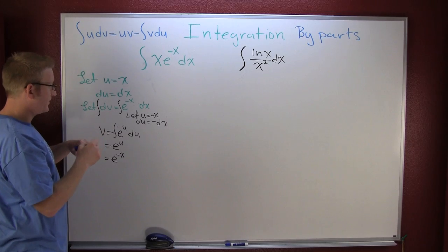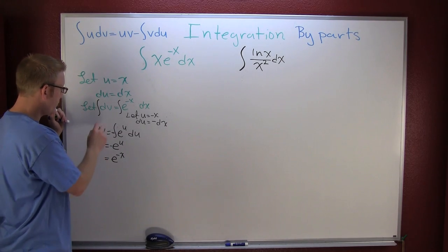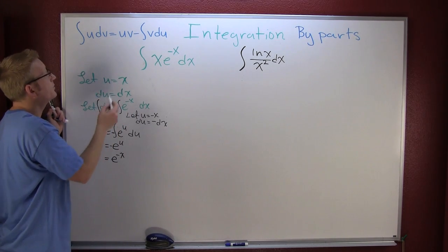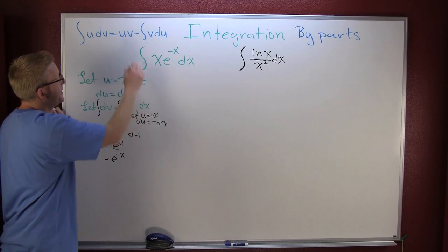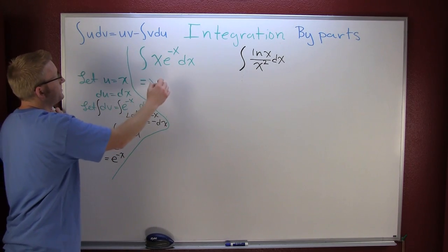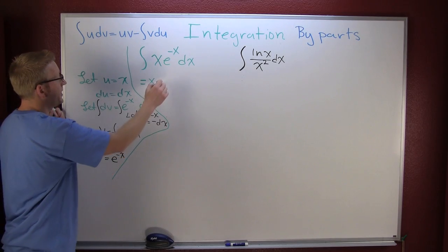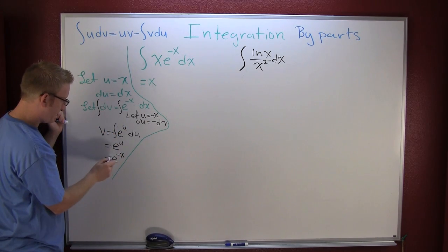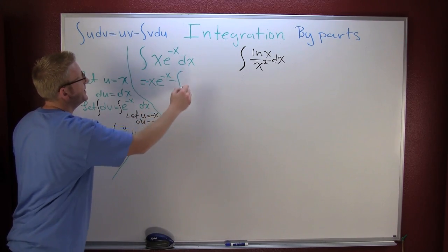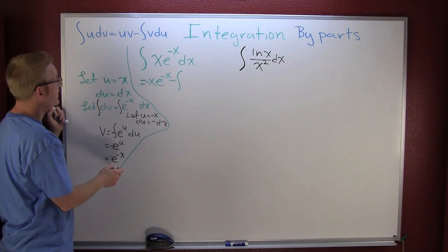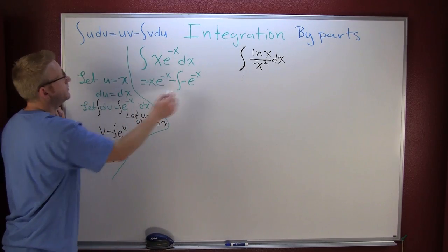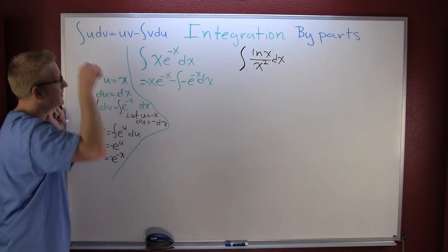Now I'm leaving off the plus c because we're going to get it in that piece of integration. So then in my green example, with my v and my du and my u, I can go through and rewrite this integral as u, which is x, times v, e to the minus x, minus the integral of v. Here I found my v to be minus e to the minus x times du, which is dx.